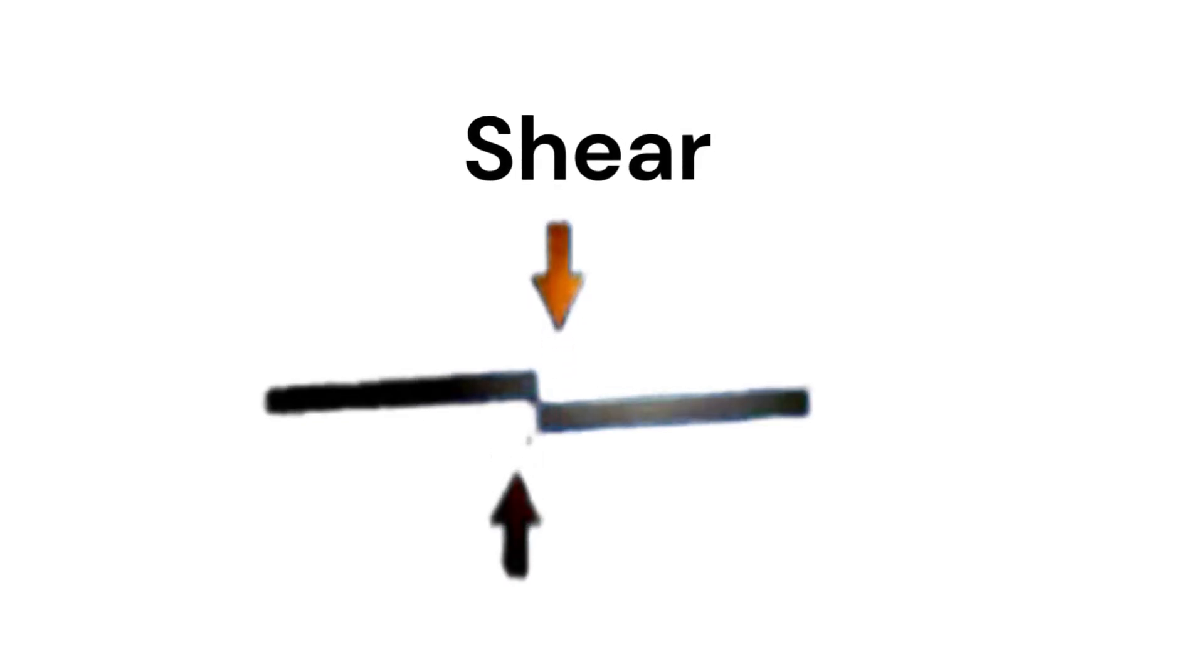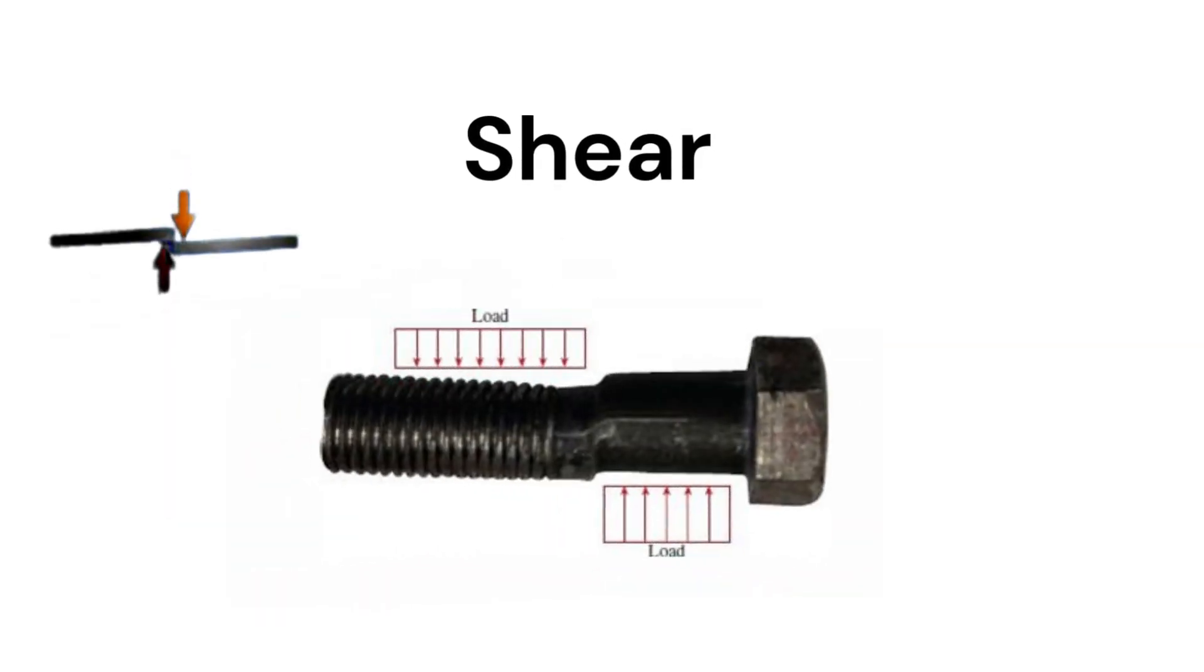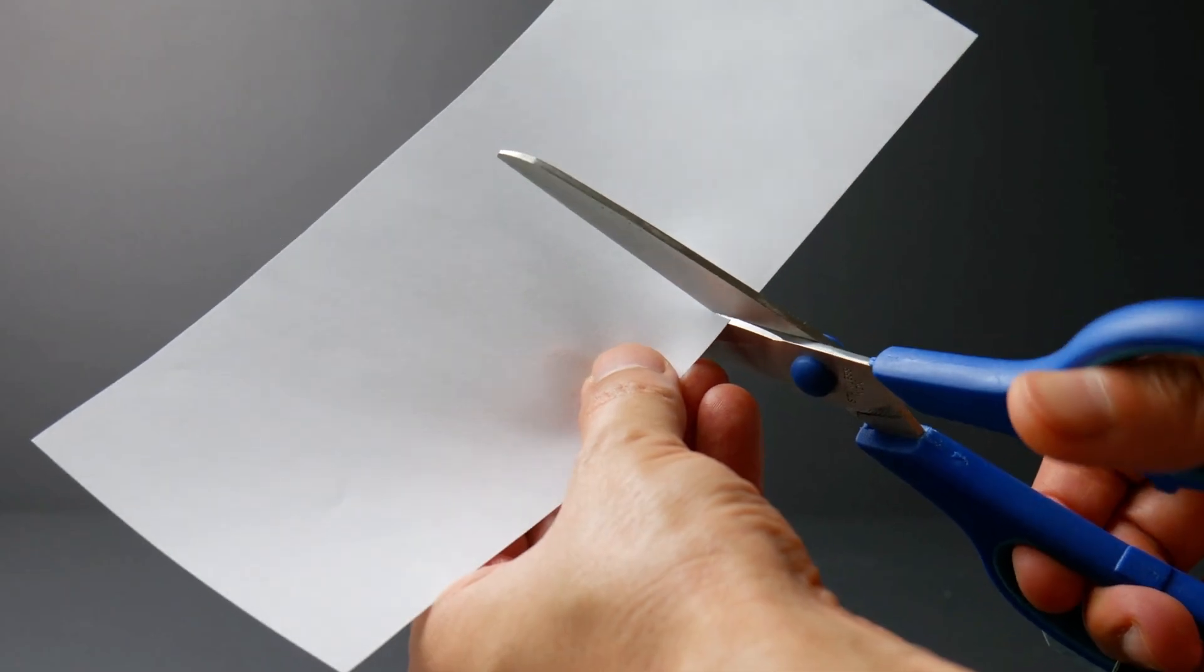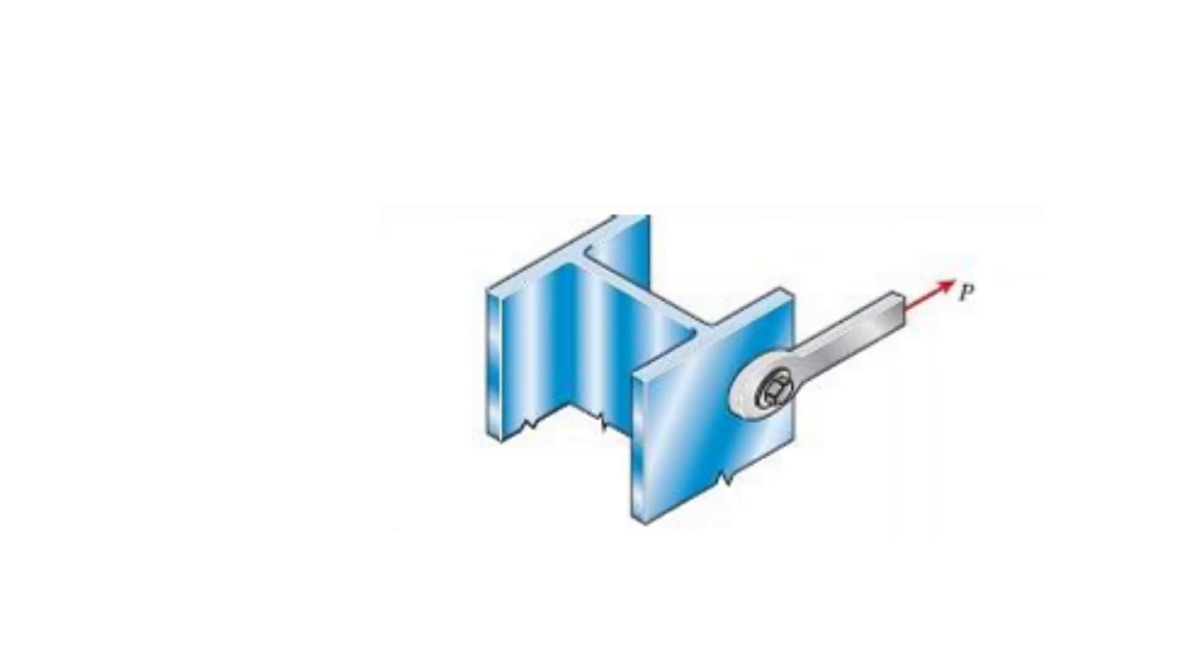Next is shear. Shear is like one part of the material sliding over the other. Two opposite parallel forces try to cut or shift the layers of a body relative to each other. A simple example is scissors cutting paper or a beam under load which develops shear forces.